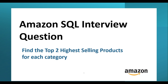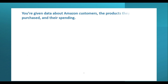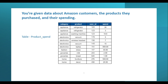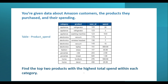Hello everyone. In this video we will solve a SQL question from Amazon interviews. In this question we have to extract the top two highest selling products within each category. Imagine you are given data about Amazon customers, the products they purchased, and their spending. You are given a table called product_spend containing four columns: category, product name, user ID, and spend amount.